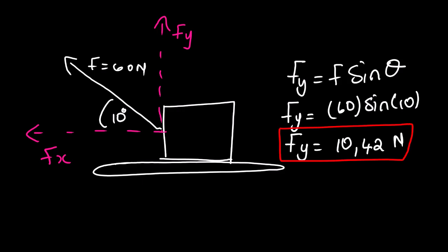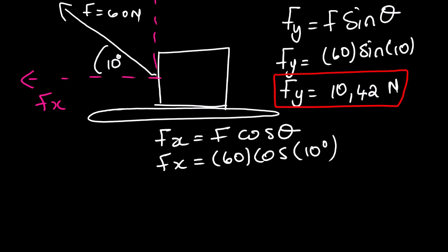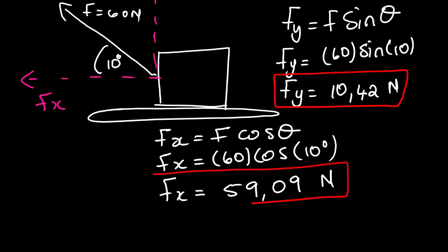Now the second question, 3.2.2: we need to calculate Fx, the horizontal component, which is F cosine theta — still using the same 60 newton force, cosine 10 degrees. The answer is 59.09 newtons. So this is our horizontal component. We are done with the first and second sub-questions.